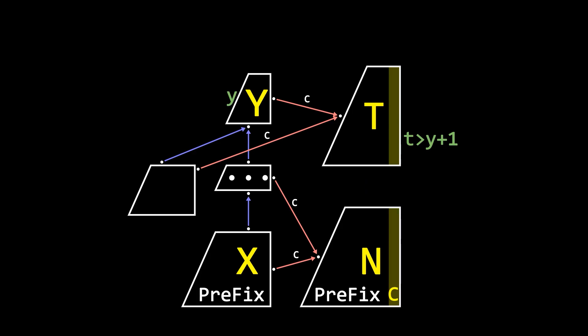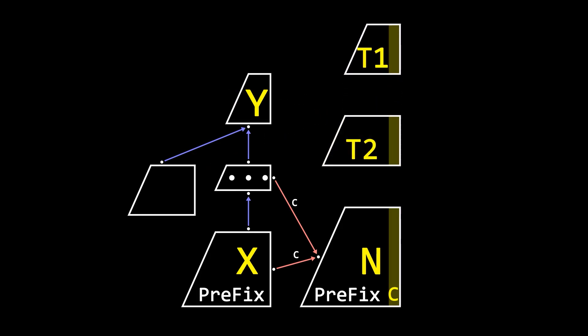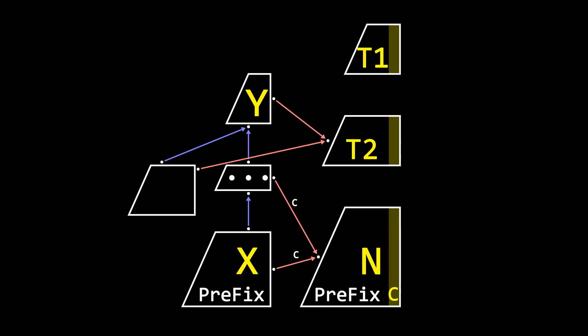If not, split T into T1 and T2, so the transitions that used to point at T should now point at T1 or T2. Strings with length longer than Y plus 1 belong to T2, so the former transitions beginning from nodes with length longer than Y should point at T2.